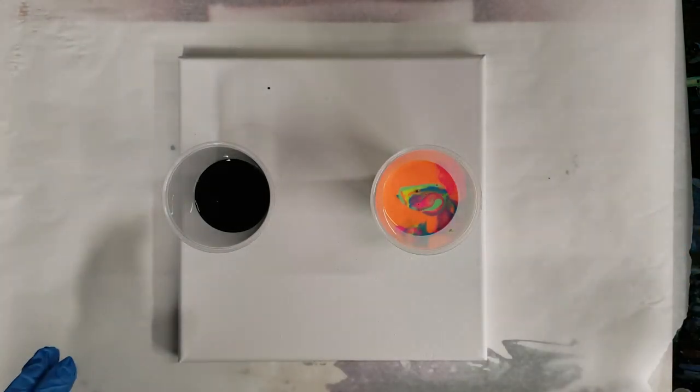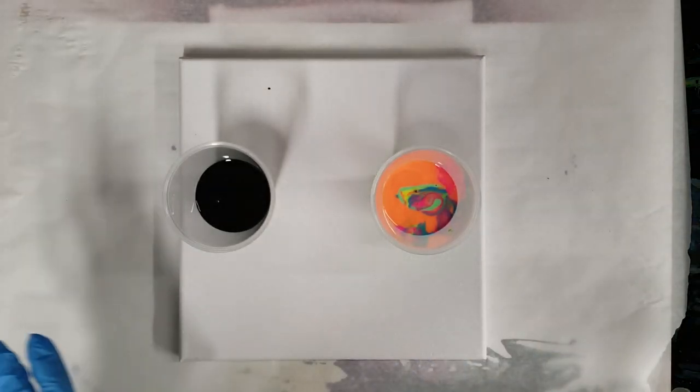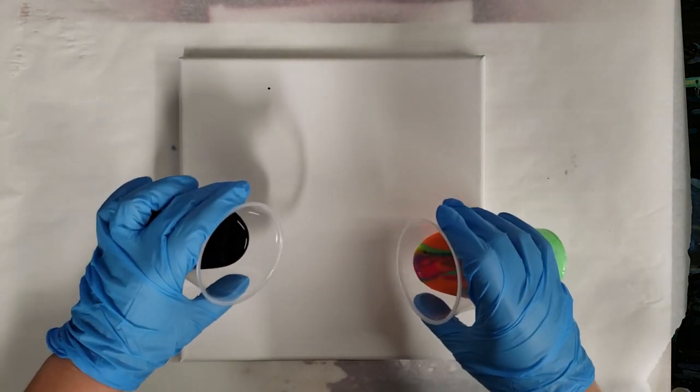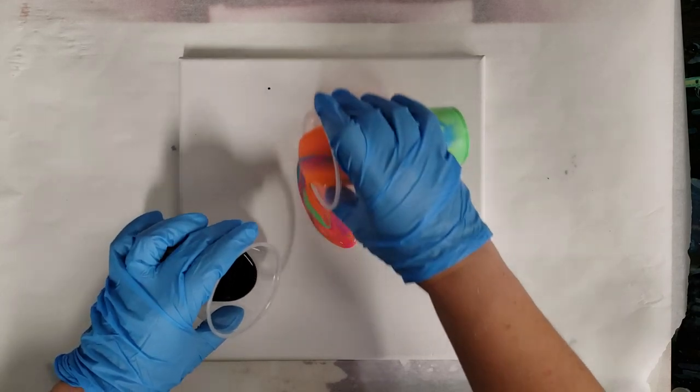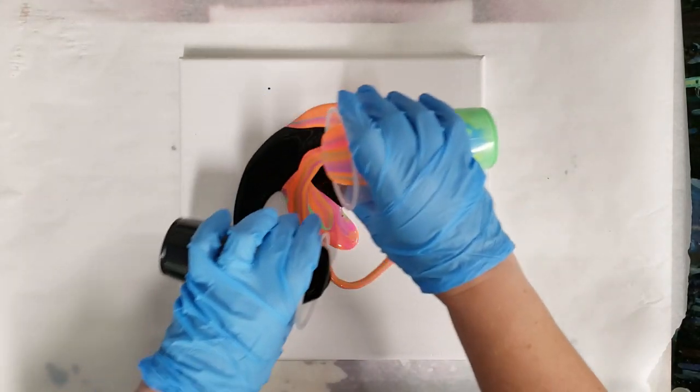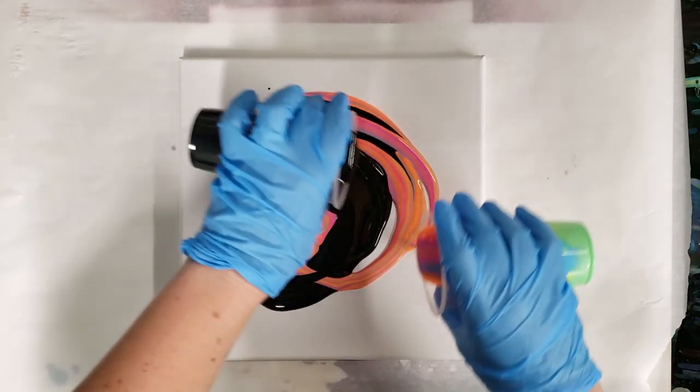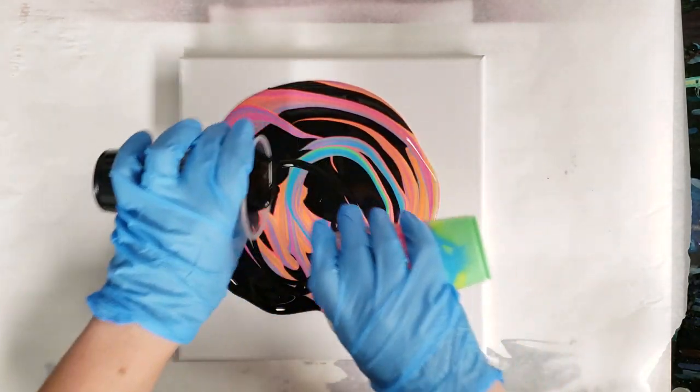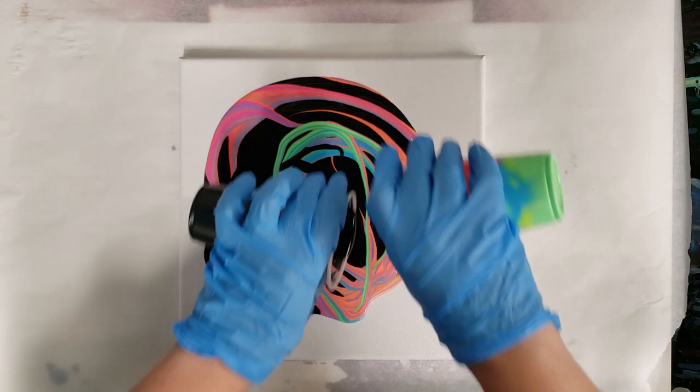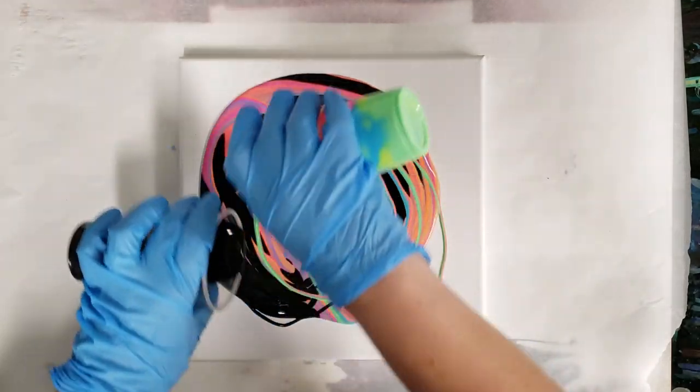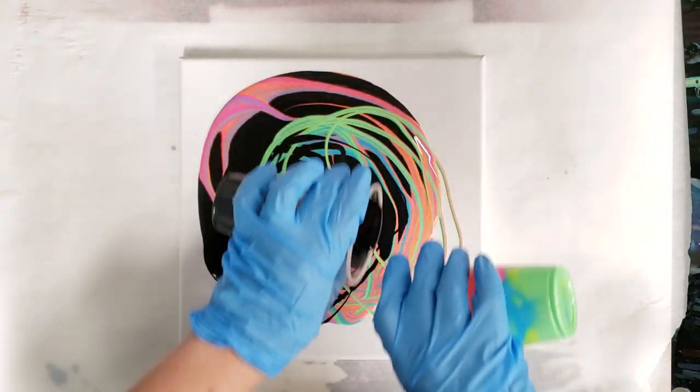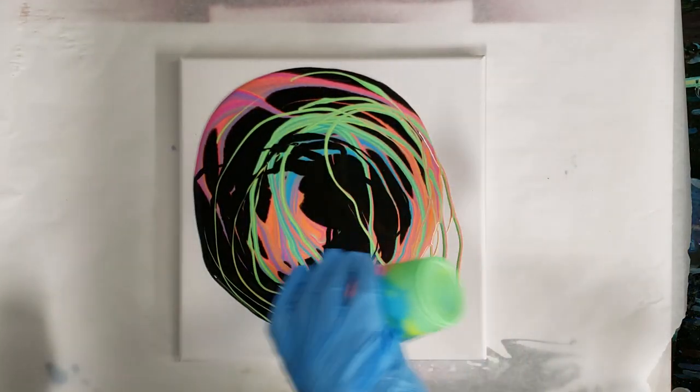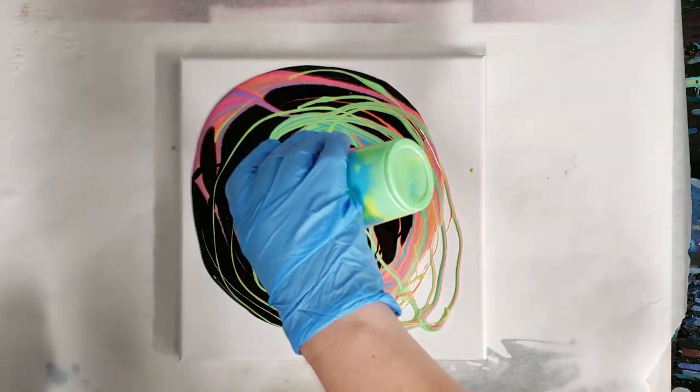Alright, so with the infinity pour, it's kind of like doing a double tree ring at the same time. Takes a little coordination, so I like to go outwards, and you're basically gonna just kind of overlap your colors like this. The name was voted on by my viewers, so they thought that this was a good name for this technique. I think so too.